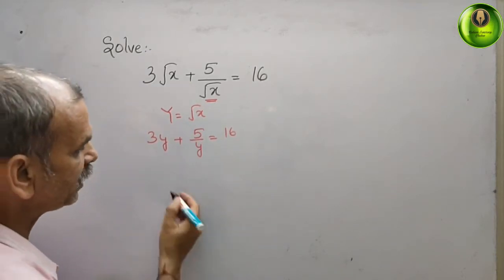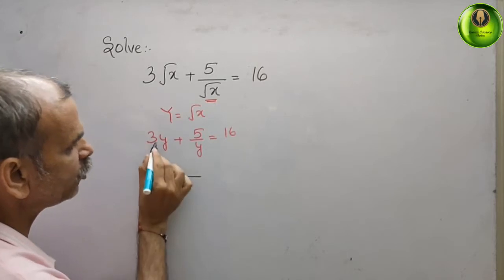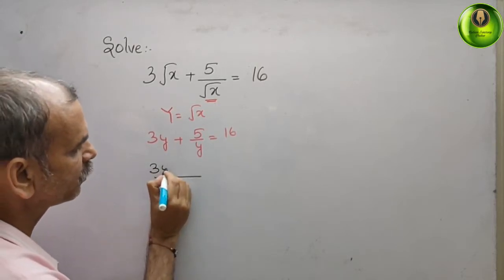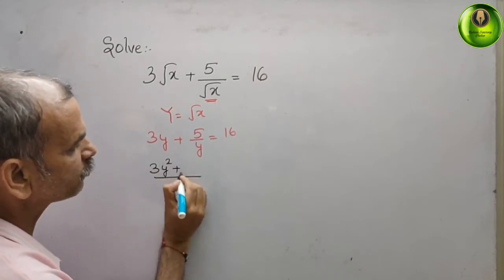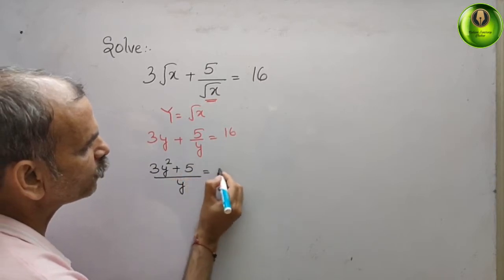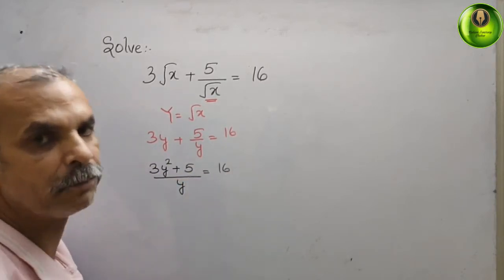So we can see y is your LCM. So here you will get 3y square plus 5, that gives you 16y. Now go for a cross multiplication.